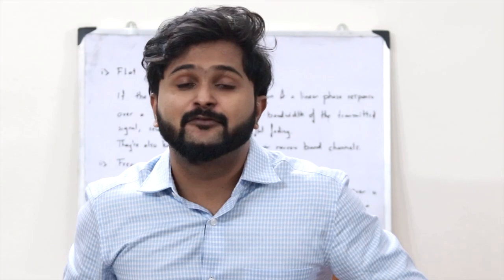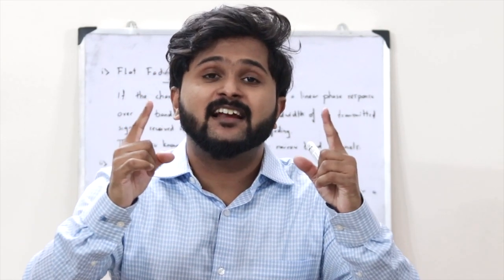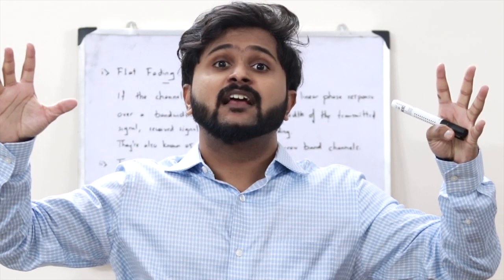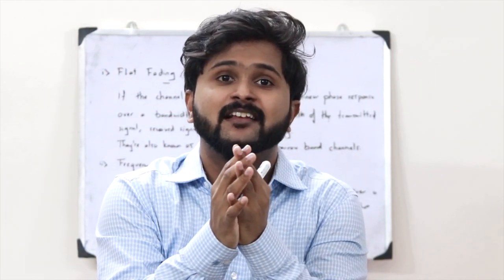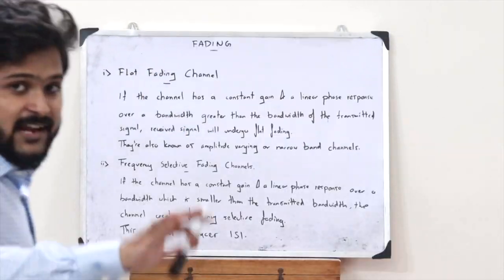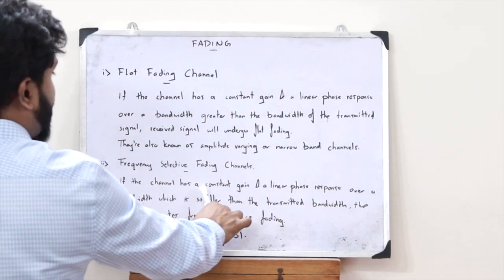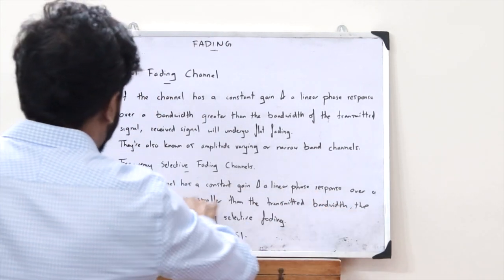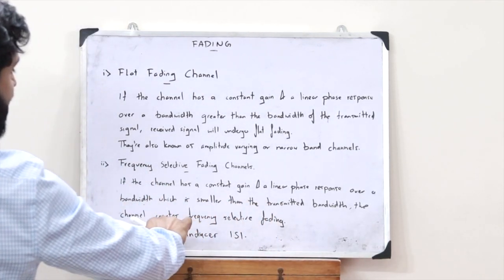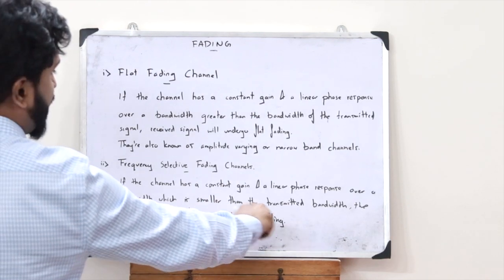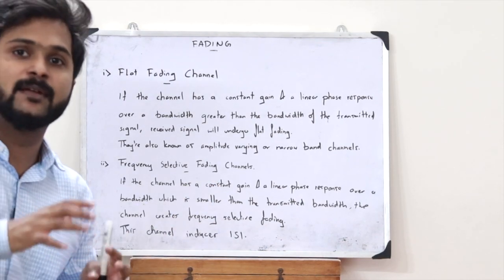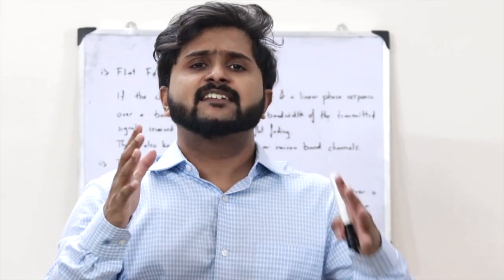Next we have frequency selective fading channels. If a channel has a constant gain and a linear phase response over a bandwidth smaller than the bandwidth of the transmitted signal, then that channel is said to be a frequency selective fading channel. This channel induces ISI, or inter-symbol interference.